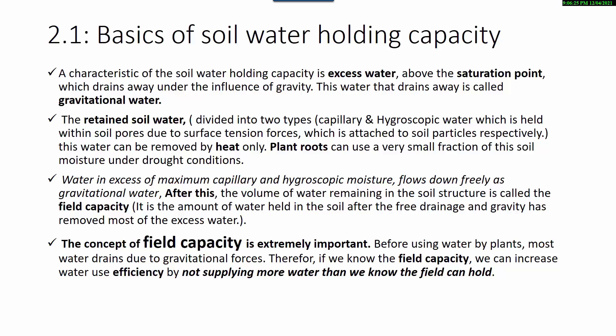Hygroscopic water is attached to soil particles and can be removed by heat only. Plants' roots can use a very small fraction of this soil moisture under drought conditions. Water in excess of maximum capillary and hygroscopic moisture flows down freely as gravitational water. After this, the volume of water remaining in the soil structure is called the field capacity. It is the amount of water held in the soil after field drainage and gravity has removed most of the excess water.